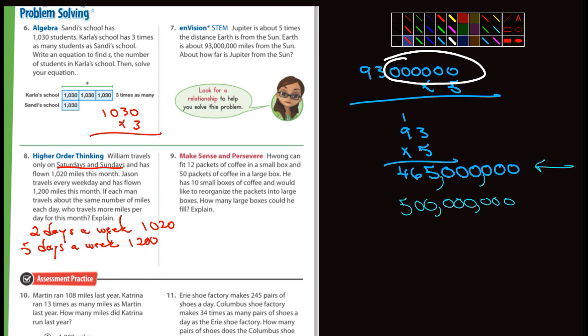If each man travels about the same number of miles each day, who travels more miles per day? Well, they're not asking you actually to solve this. So they're both a little bit over a thousand. And if he only travels two days a week, that means he's going a lot more in his two days than Jason is in his five days. I hope that makes sense to you. I'm not sure how else I could explain it.